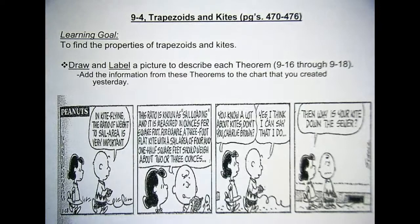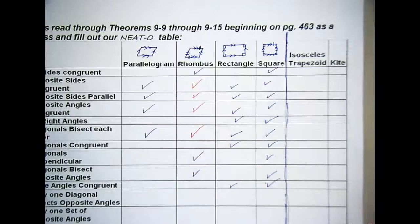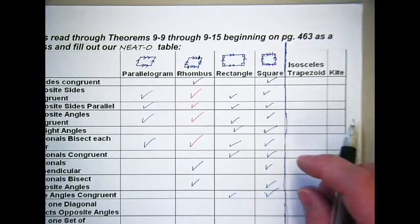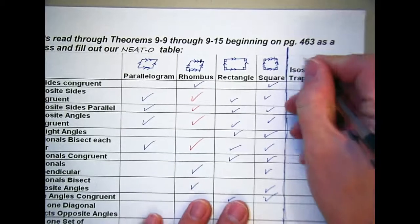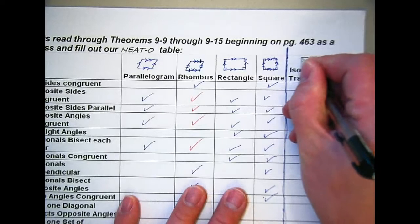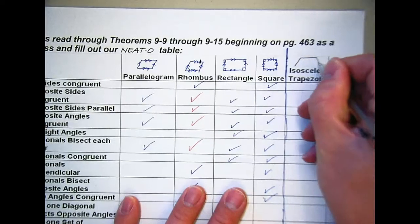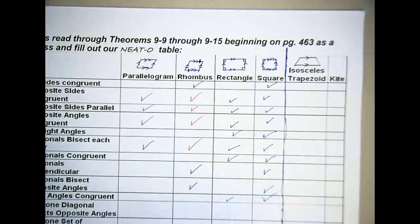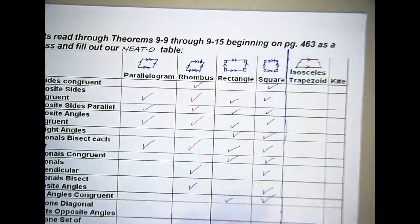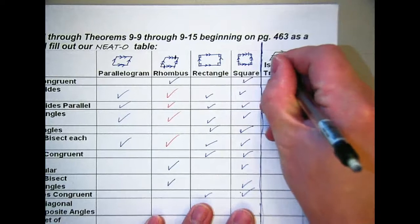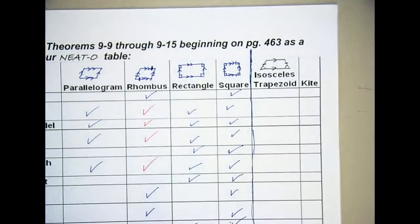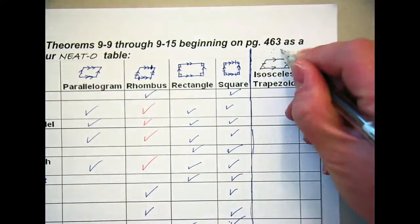Okay, so going through these, we have our neato table and we talk about an isosceles trapezoid. Well first, what is a trapezoid? Quadrilateral with one set of parallel sides. Now if you have an isosceles trapezoid, it's different than just the run-of-the-mill trapezoid. An isosceles trapezoid still has the one set of parallel sides, but what else?